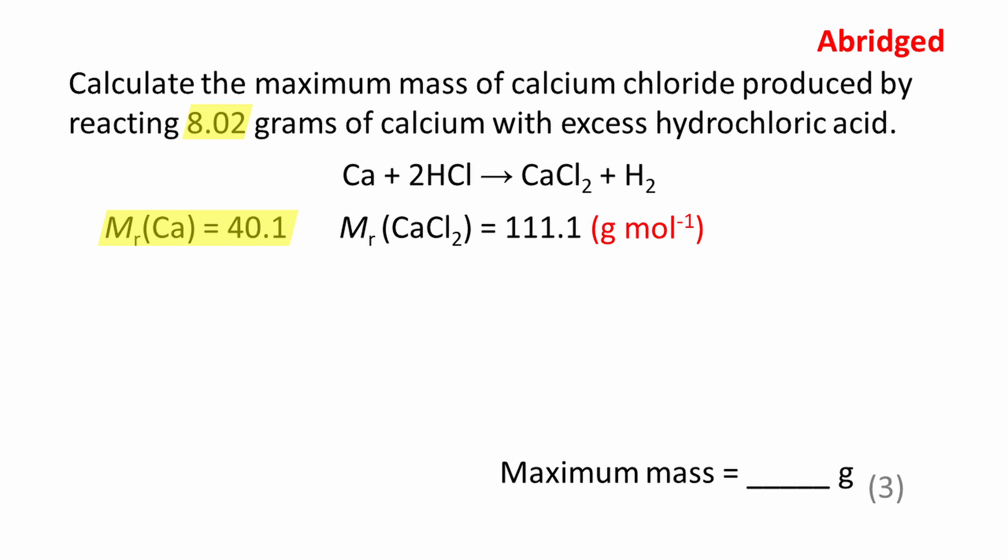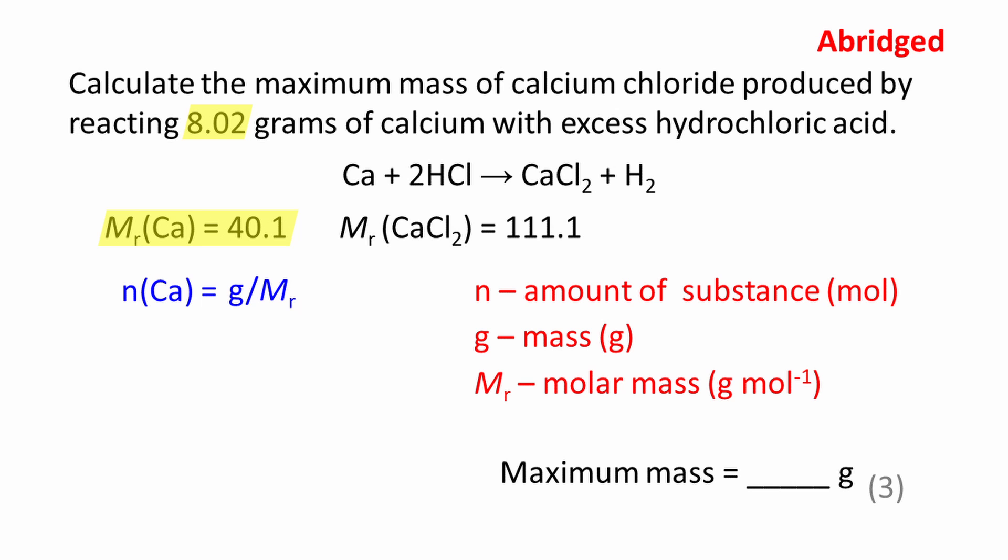We are given some data associated with the calcium. The mass of calcium is 8.02 grams, the molar mass of calcium is 40.1. You will need to be familiar with the equation: amount equals mass divided by molar mass (n = g/M). The symbols for these variables are given here in red with units. The amount of calcium works out to be 0.200 moles.